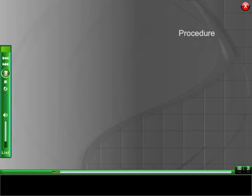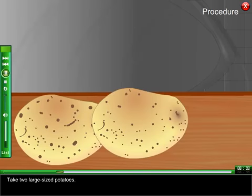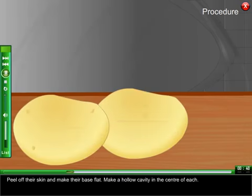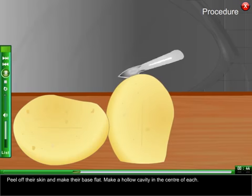Procedure. Take two large sized potatoes. Peel off their skin and make their base flat. Make a hollow cavity in the center of each.